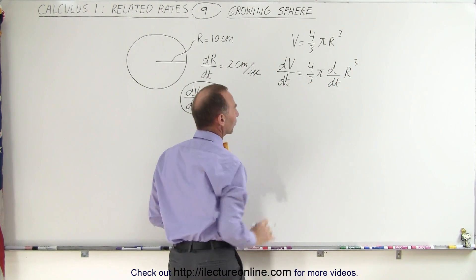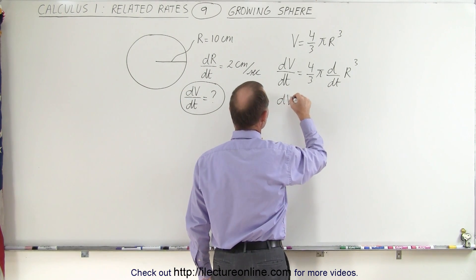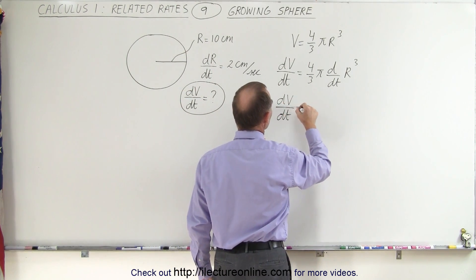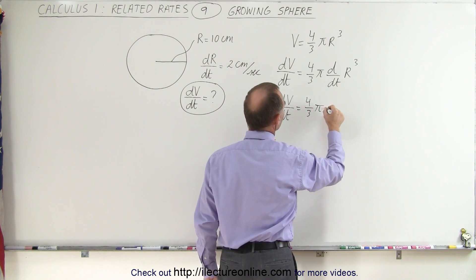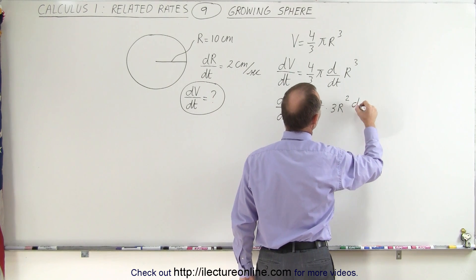Since 4 thirds and pi of course are constants, and when we take the derivative of that, we get dV/dt is equal to 4 thirds pi times 3r squared dr/dt.